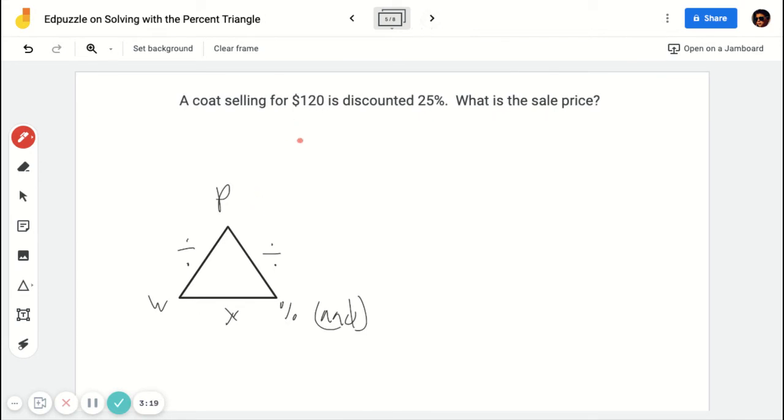A coat selling for $120 is discounted 25%. What is the sale price? So when I see something like what is the sale price, immediately I don't know what this is. And that's what I'm going to have to be looking for. So I know the $120 is the whole. And the percent is 25%. But remember, I have to make it into a decimal. So it's 0.25.